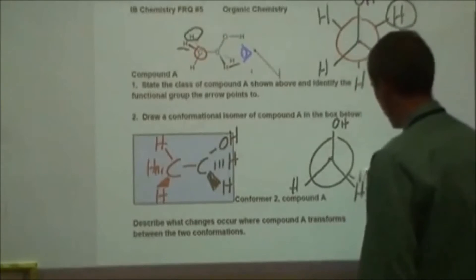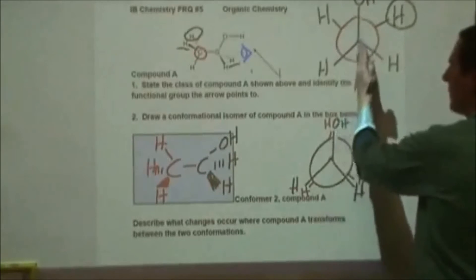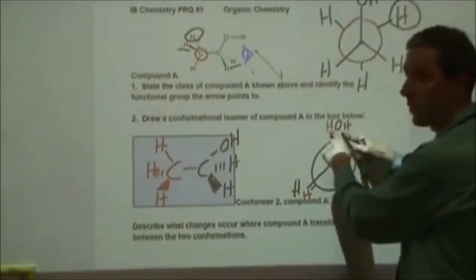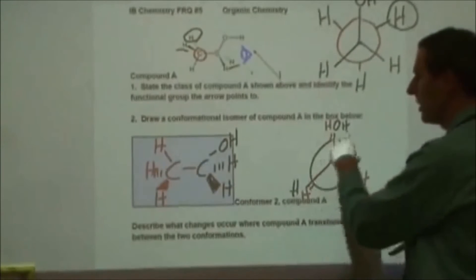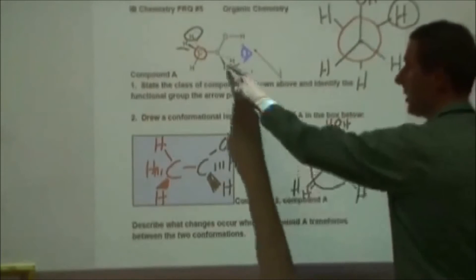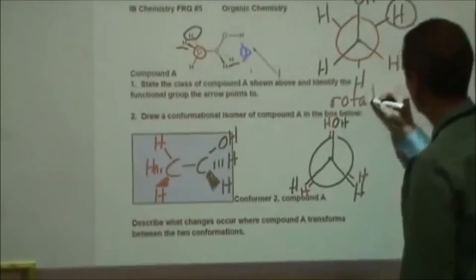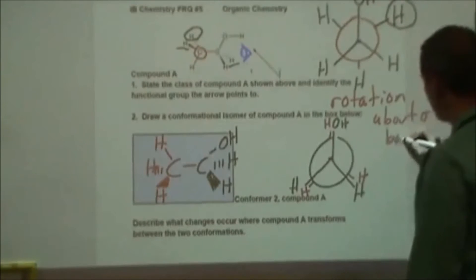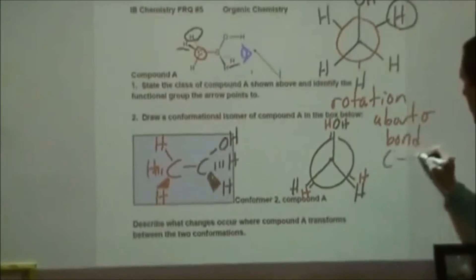Molecules like this rotate from one form to the other all the time at any reasonable temperature. We're going from a 60-degree gap to a zero-degree gap. This eclipsed form is less stable because these groups are very close together and it leads to some repulsion; however it's not very unstable because nothing on here is very bulky. The change that causes this switching is a rotation about the sigma bond — if we had pi bonds that would lock it in place and it wouldn't be able to rotate without breaking.